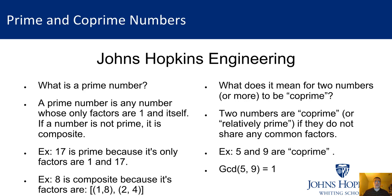Prime numbers are probably exactly what you would expect. A prime number is any number whose only factors are 1 and itself. If a number is not prime and has factors other than itself and 1, we call that number composite. For example, the number 17 is a prime number because no other numbers less than 17 go into 17 evenly — its only factors are 1 and 17. However, the number 8 is a composite number. It's not prime because we can also make 8 by multiplying 2 times 4.